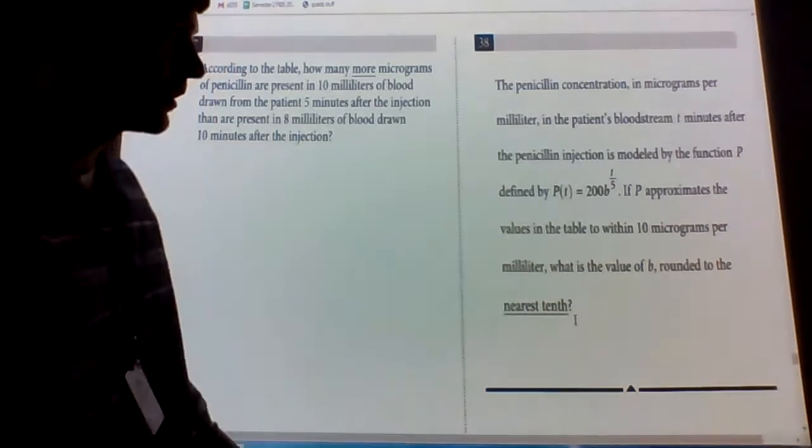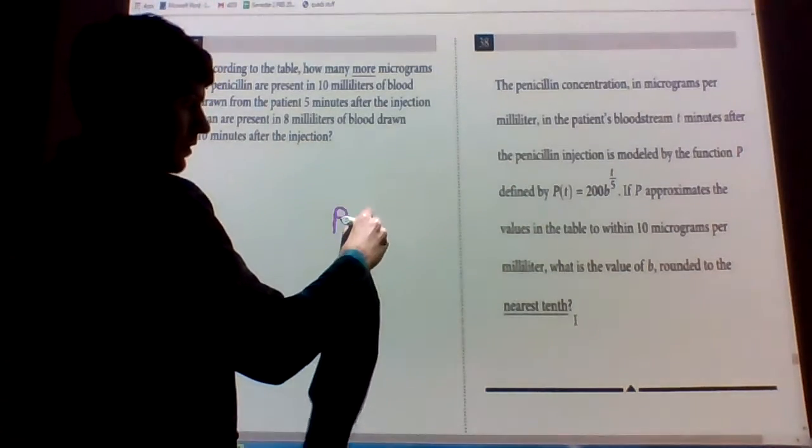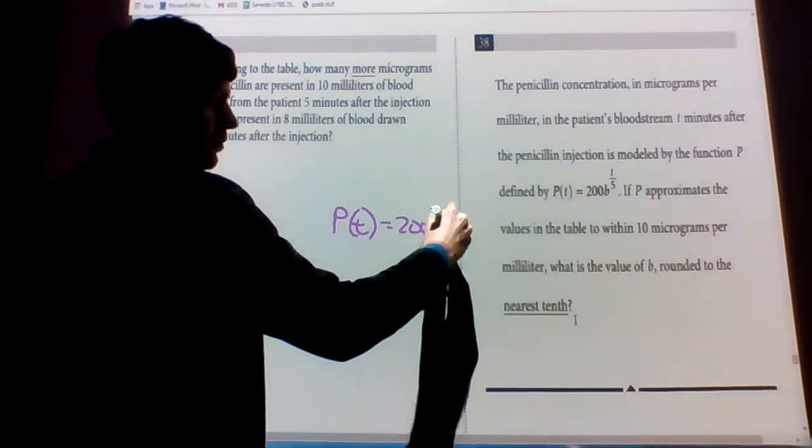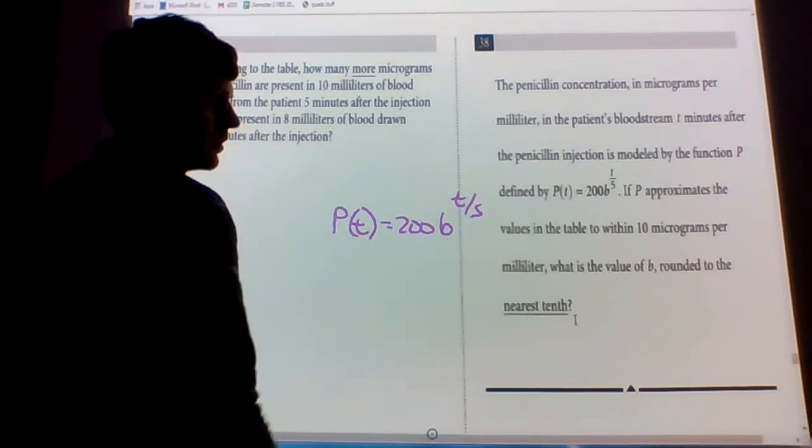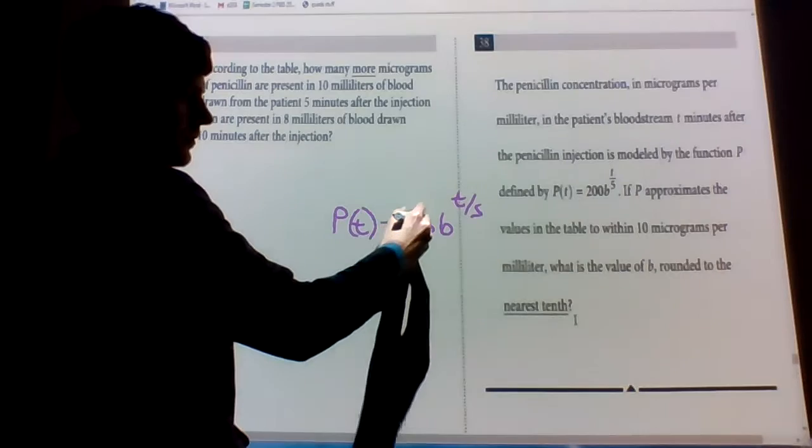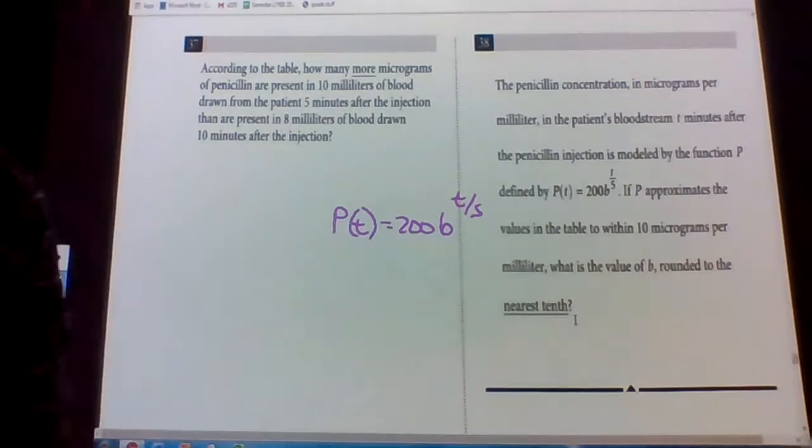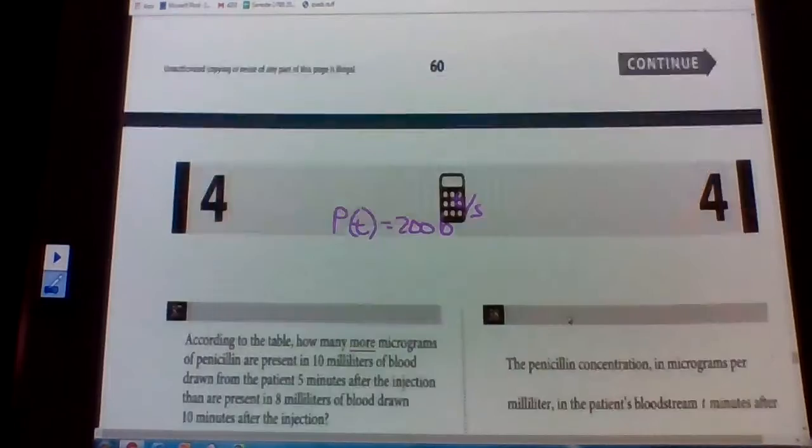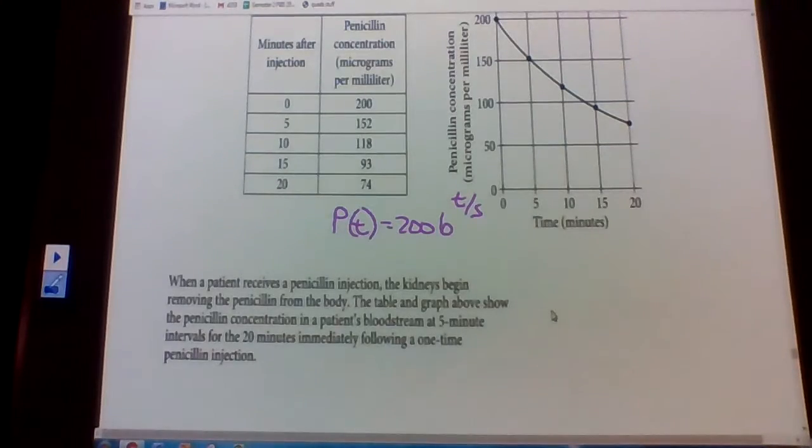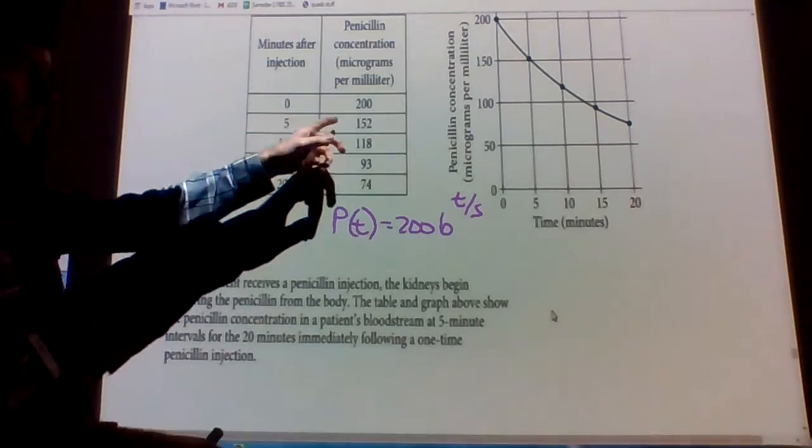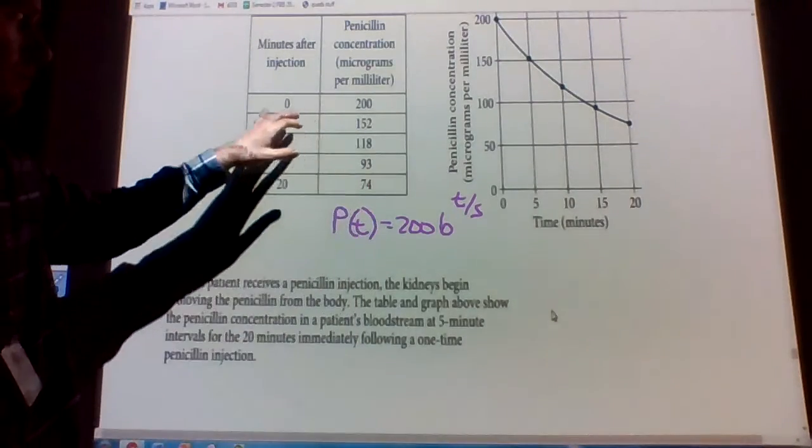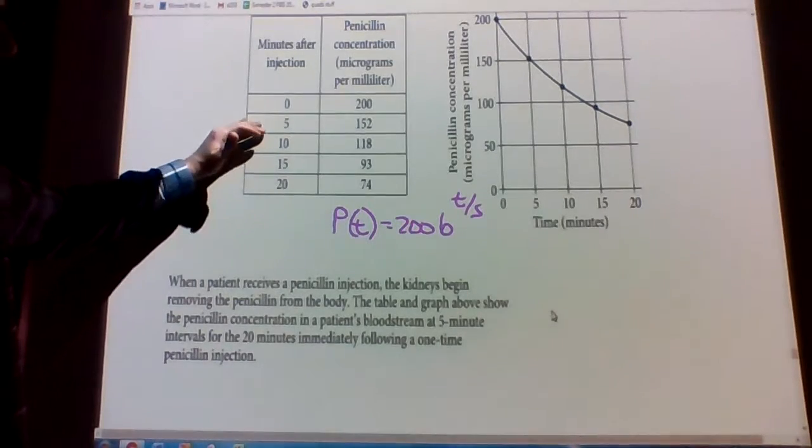Okay, so we were doing it right. We have our equation P of T equals 200B to the T over 5. And then we're simply plugging in one of the numbers. So if we go to the graph or the chart here, we just plug in one of these numbers. So the reason you can't do 5, I mean you can do 5, you can do any of these.